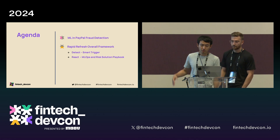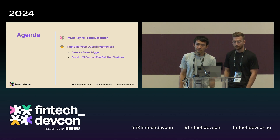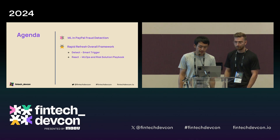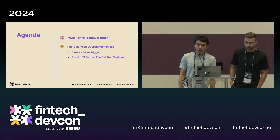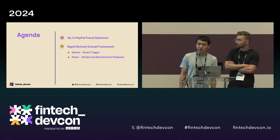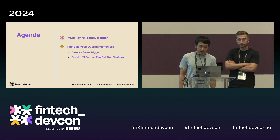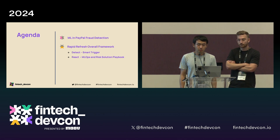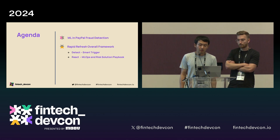Today's agenda is as follows. First, I will give a brief introduction about machine learning in PayPal fraud detection. Then I will give a brief introduction about our overall rapid refresh framework. The framework contains two parts: the first is about detection, where I'll introduce the smart trigger framework; and the second part is about reaction, where my colleague Matt will introduce how we bring MLOps practices into PayPal and our homegrown risk solution playbook.